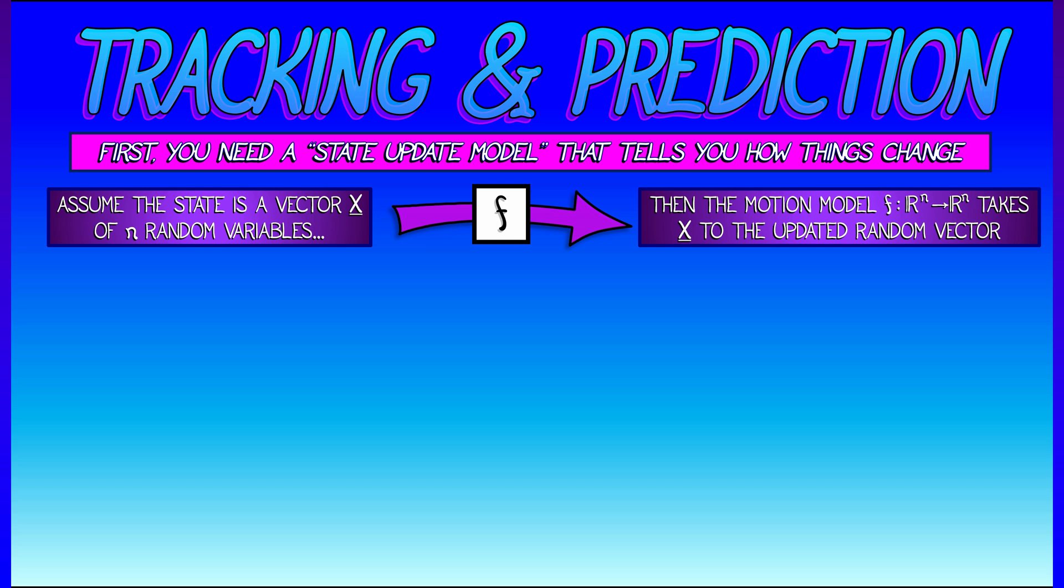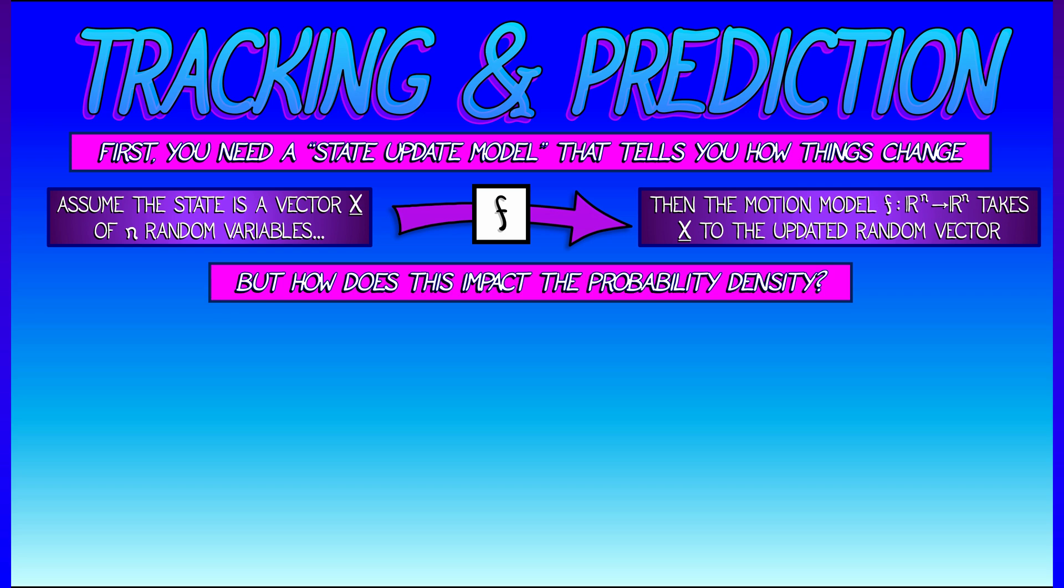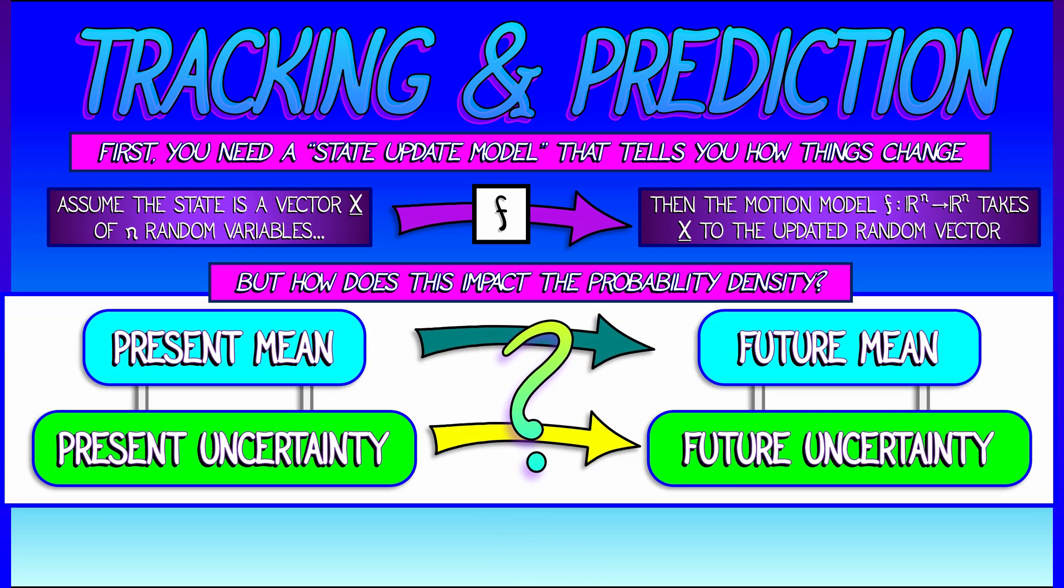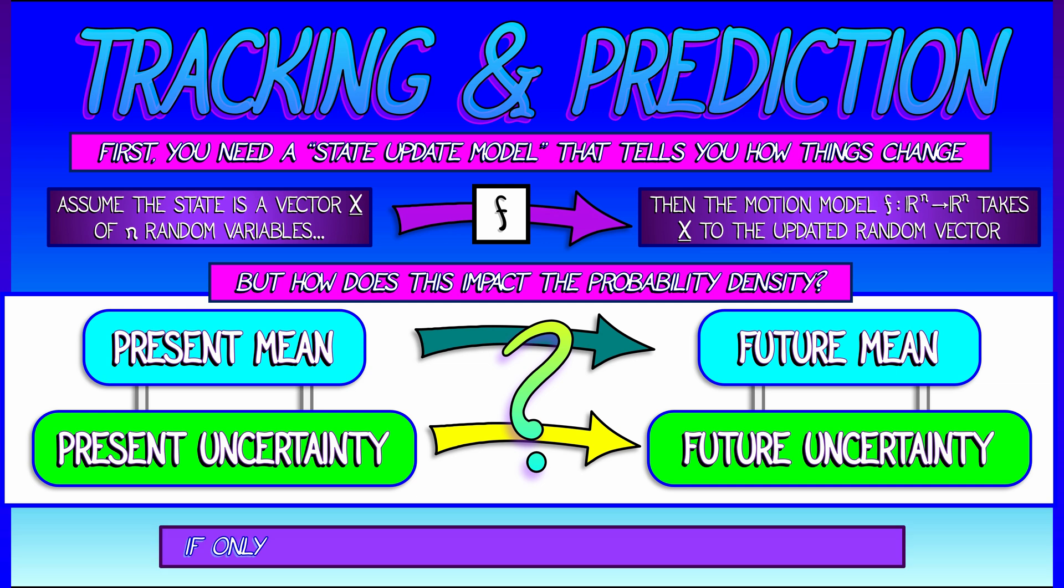Let's say that I have a model that predicts where I'm going to be. And that model is given by some nonlinear function f that takes my vector of random variables x to the updated vector of random variables. If I know where I'm at now and I know the uncertainty of where I'm at now, that is, I know the present mean and the present covariance matrix, what happens at the next time step?